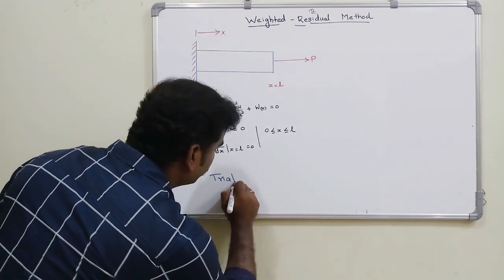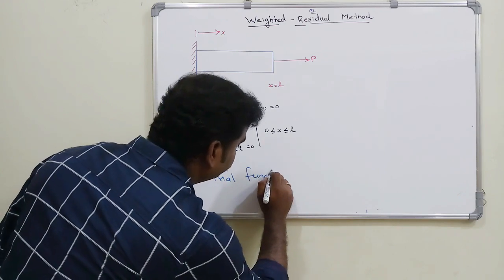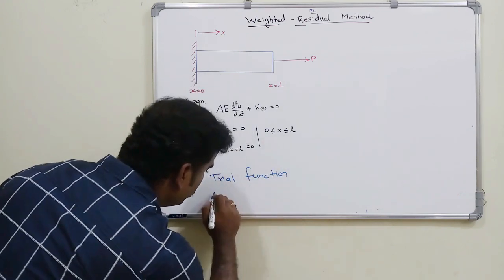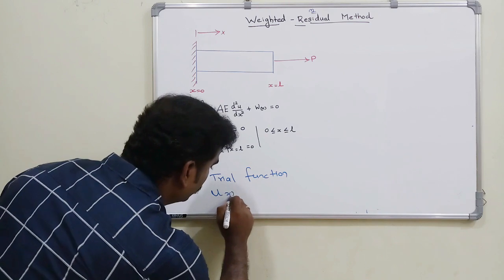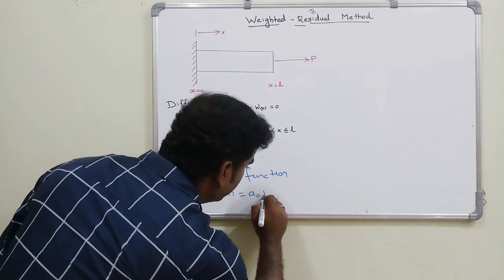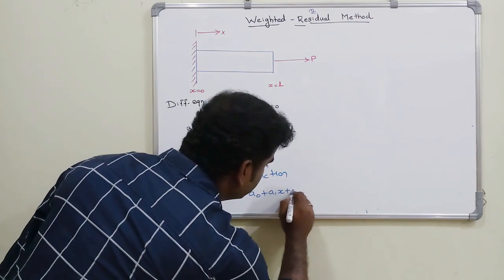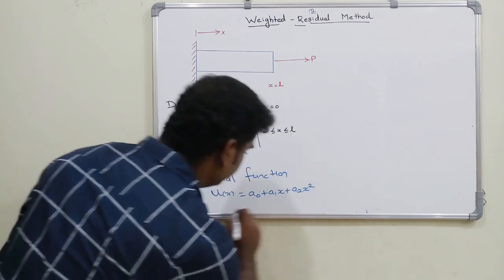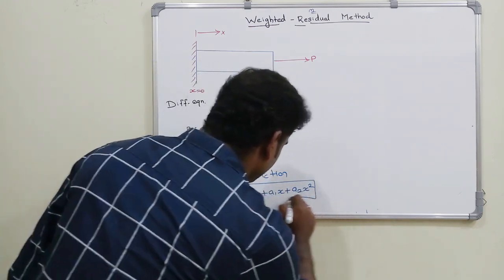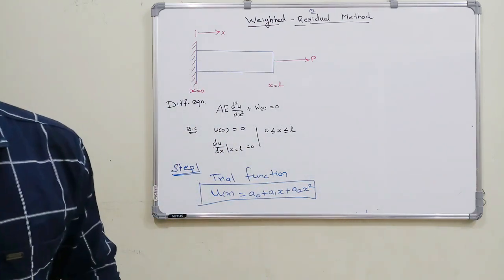Assume the trial function: u(x) = a₀ + a₁x + a₂x². This is our assumed quadratic polynomial trial function.